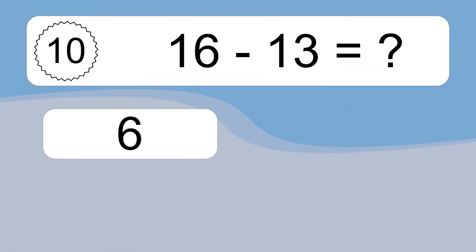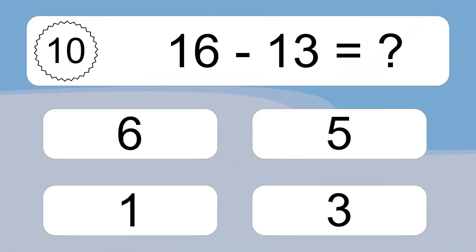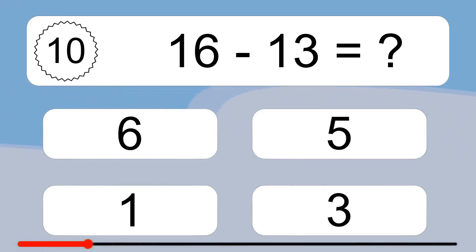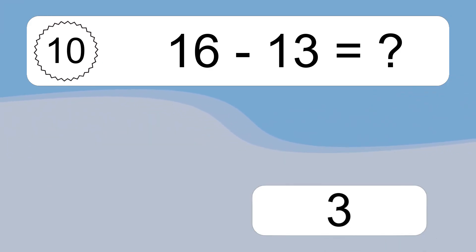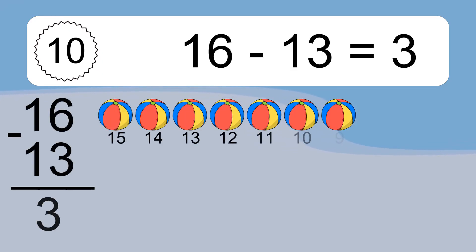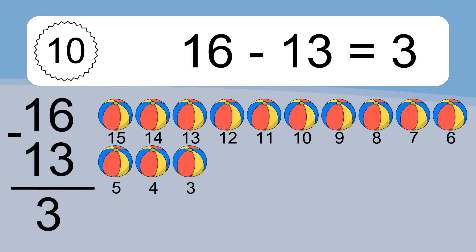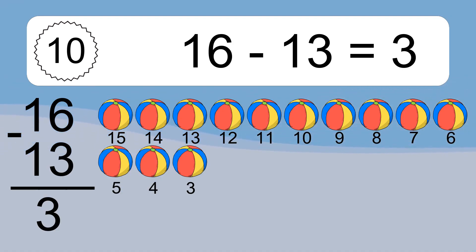16 minus 13 equals what? 16 minus 13 equals 3. Let's count it: 15, 14, 13, 12, 11, 10, 9, 8, 7, 6, 5, 4, 3.